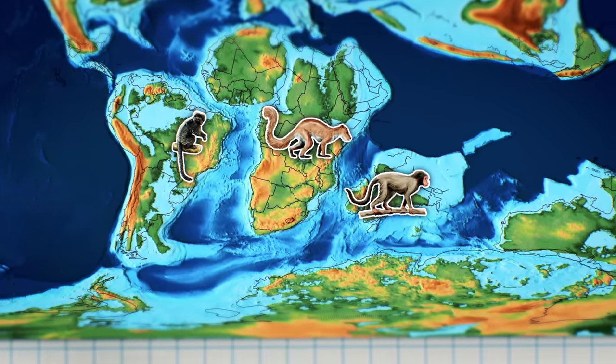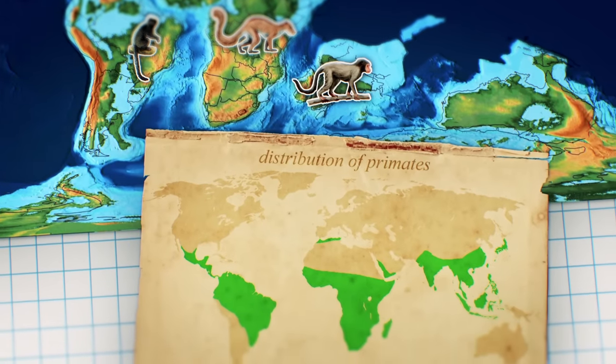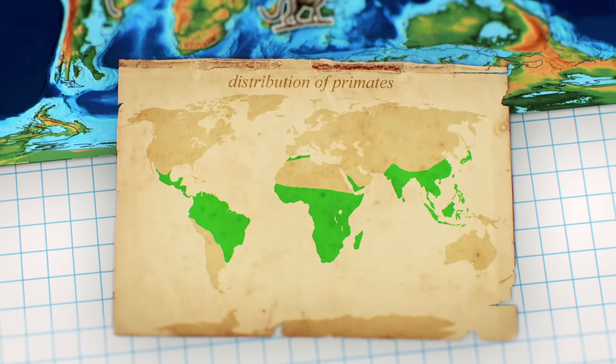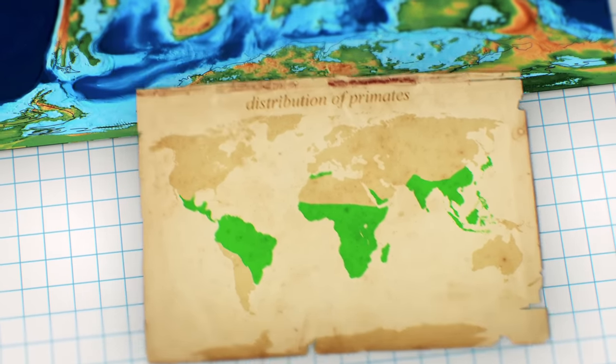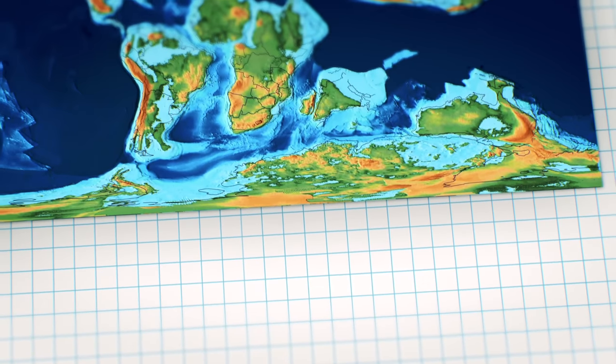This explains why the modern distribution of primates, minus humans of course, looks like this, reflecting a late Gondwanan dispersal. As Gondwana broke up even further, so too did the tropical realm.